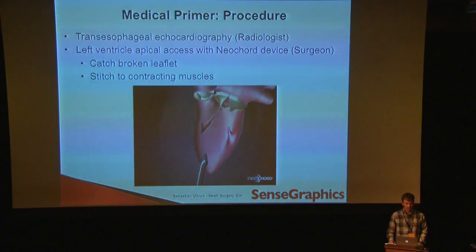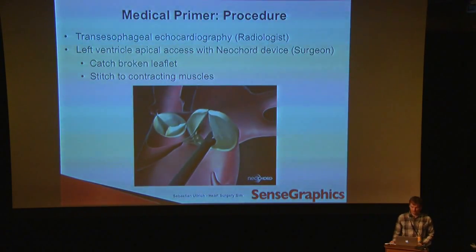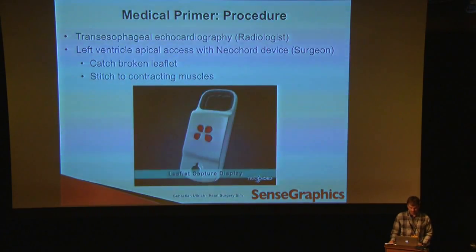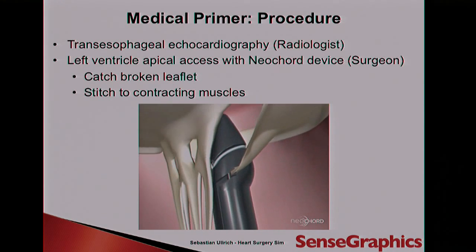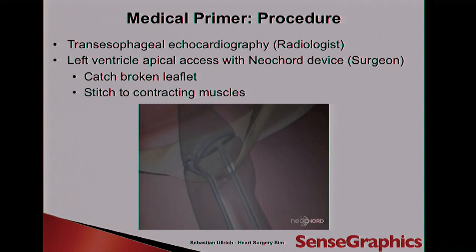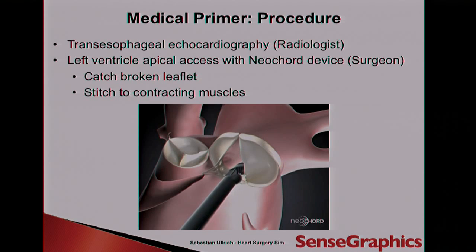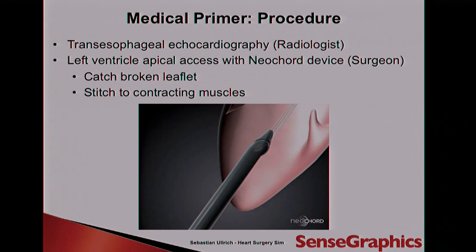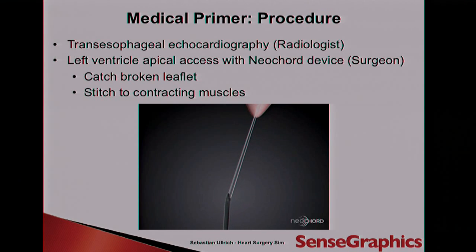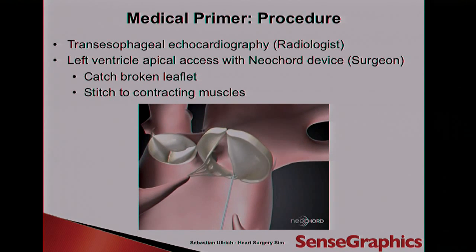This minimally invasive procedure involves a new kind of instrument being inserted that catches the broken valve leaflet. A radiologist moves an ultrasound simultaneously because the surgeon cannot look into the heart and it's too difficult to move an optical camera inside. Once the surgeon grabs the leaflet, they stitch a thread through it and attach it to one of the moving walls of the heart — an artificial cord that helps move the valve again in a more correct way. With this, I conclude the introduction and now move on to the modeling in Blender.